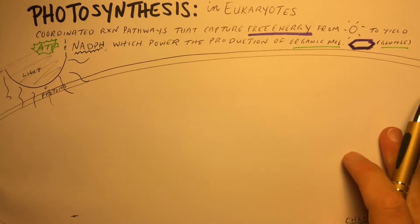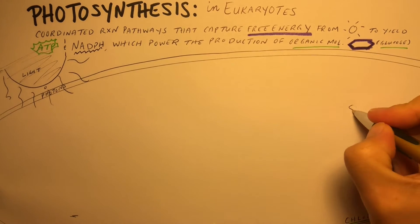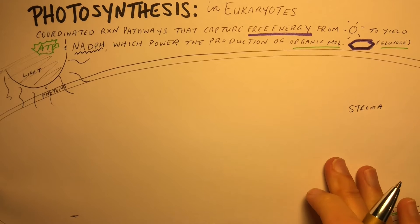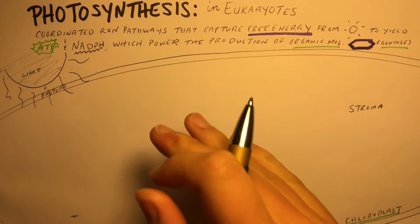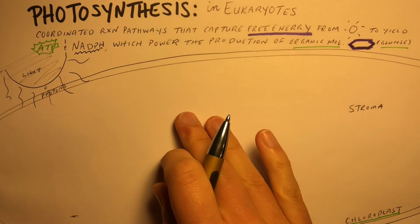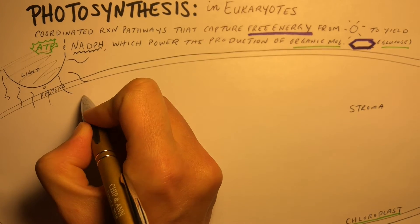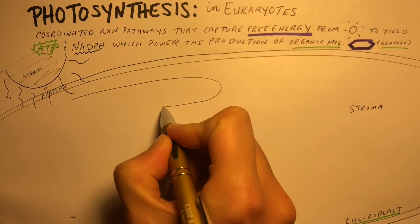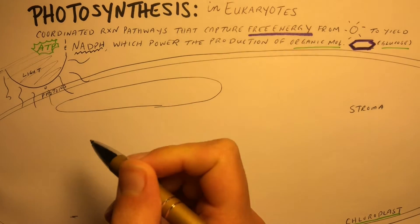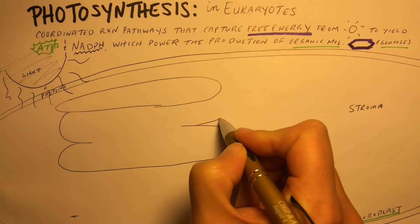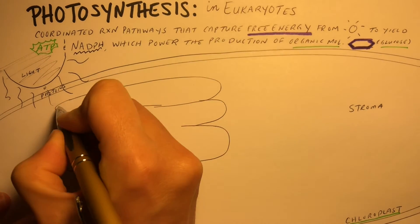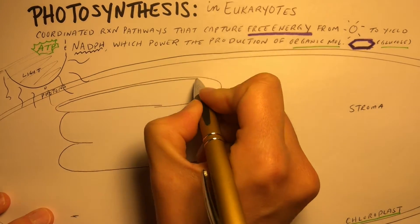Within our chloroplast, we have this area called the stroma, and this is where the dark reactions, or light independent reactions, are going to take place. We also have the thylakoid, which you might see drawn as stacks like this. These also have a membrane.